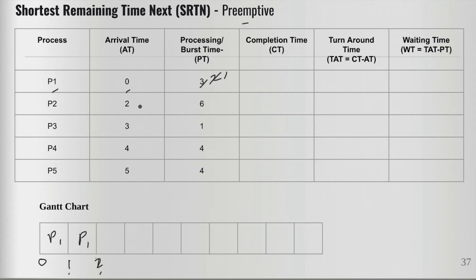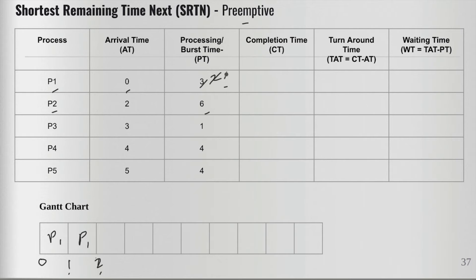At time interval two, P2 has arrived. To decide whether to bring P2 in, we compare remaining processing times. P1 has one unit remaining and P2 has six units remaining. Since P2's processing time is higher than P1's remaining time, we cannot bring P2 in. We let P1 continue executing.